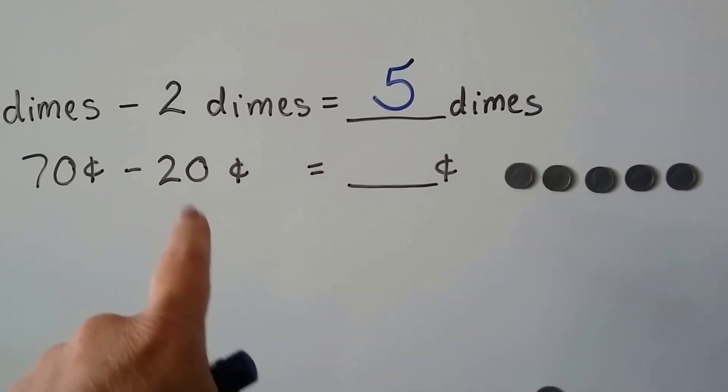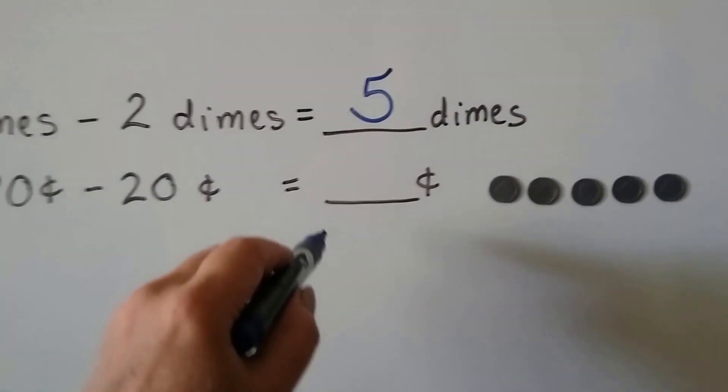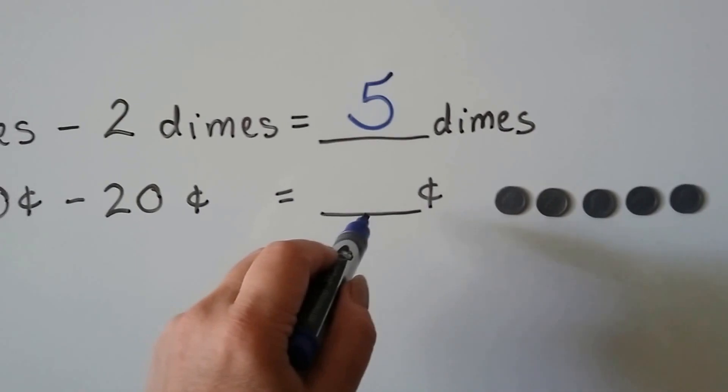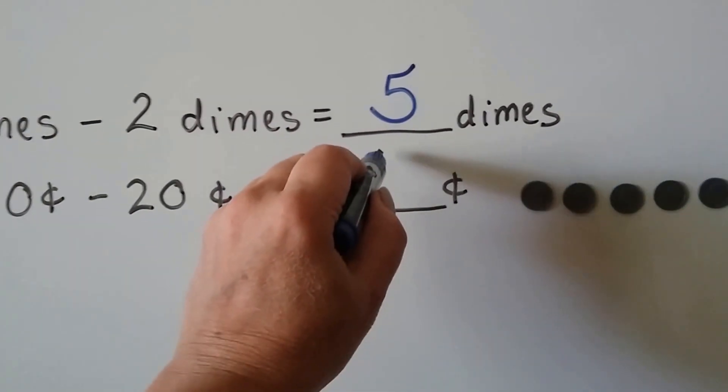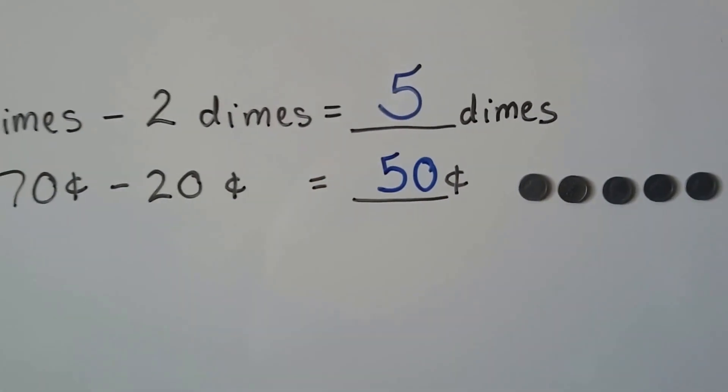Seventy cents minus twenty cents would be, do you know? Fifty cents. If you said fifty cents, you got it right.